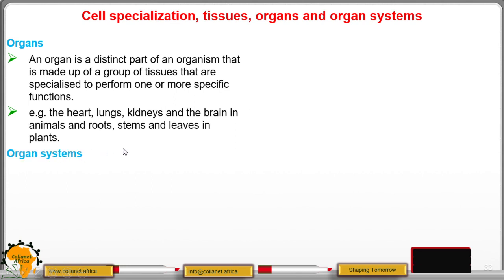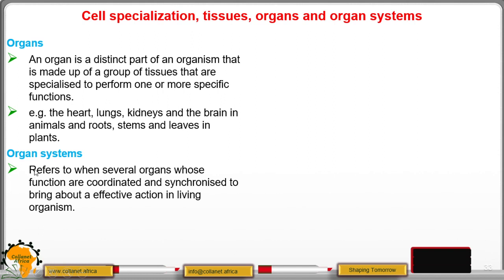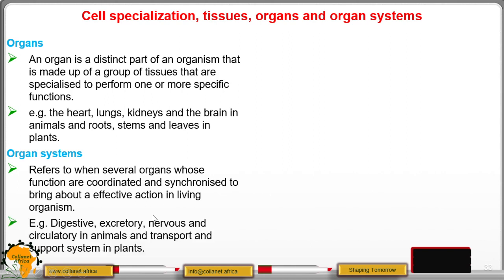The organ system refers to when several organs whose functions are coordinated and synchronized to bring about effective action in living organisms. For example, we have the digestive system made up of several organs like the mouth, the small intestine, large intestine, liver, pancreas, among other things to form the digestive system.